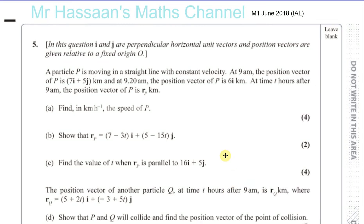Question number five from Mechanics 1, June 2018 International A Level — a question about vectors. In this question, i and j are perpendicular horizontal unit vectors and position vectors are given relative to a fixed origin. So basically i and j are both horizontal, in one plane — it's just a particle on the horizontal ground, and i and j are perpendicular to each other.